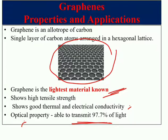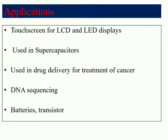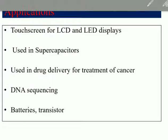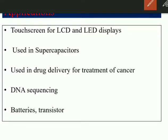Because of its excellent optical property, graphene is used in touch screens for LCD and LED displays. It is also used in energy generation and storage such as batteries, transistors, and supercapacitors. Additionally, it is used in biomedical applications such as drug delivery for cancer treatment and DNA sequencing.